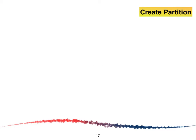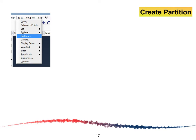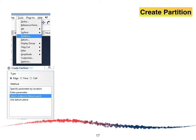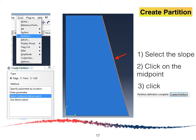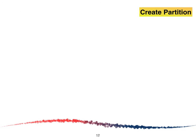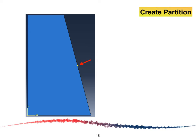The next step is to create a partition. Click on Tools in the menu bar, click Partition, and the Create Partition window will appear. Select Edge for the type and Midpoint for the method. Then select the slope line. We use Create Partition because when we modeled the dam, the sloped line is one straight line, so we split it into two different lines using the partition method. Click on the midpoint, then click Create Partition. A yellow dot will appear and the slope line will be divided into two different lines.